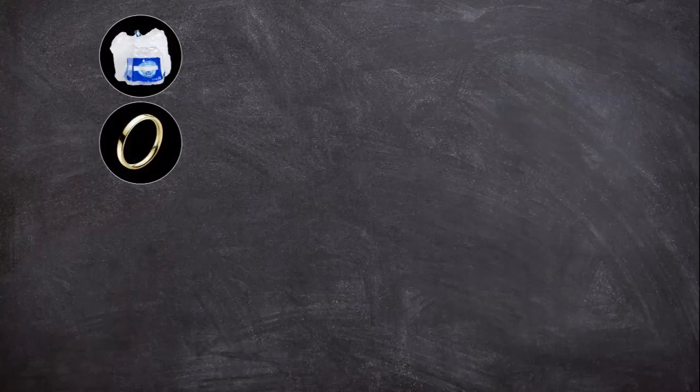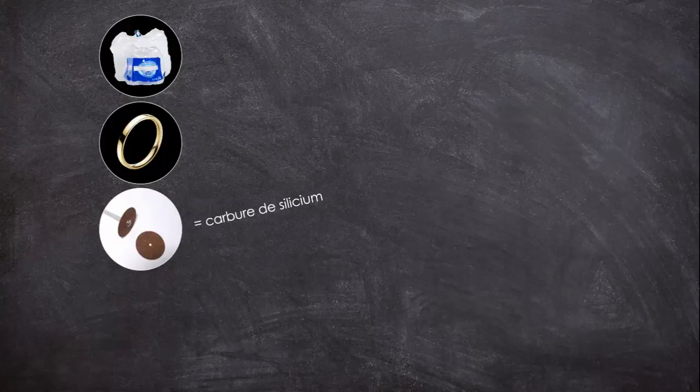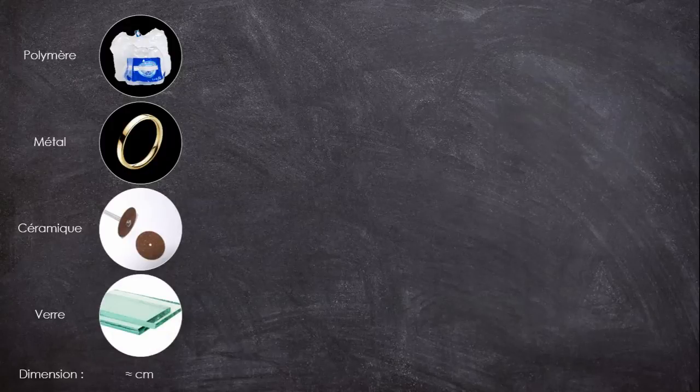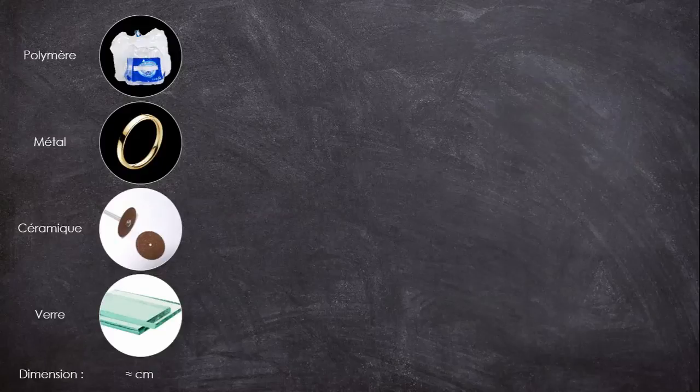On va partir de 4 objets. Un film plastique d'emballage, une bague en or, un disque de découpe en carbure de silicium et un morceau de verre. Ça en fait un par famille principale, sauf pour les verres et céramiques, mais c'est parce qu'il y a une différence notable entre les deux.